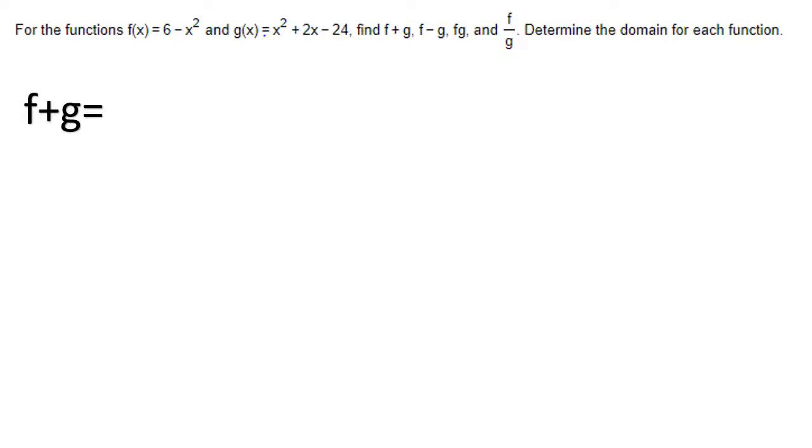Here's an example. We're given two functions, function f and function g. First, let's look at adding. I will take function f, which is 6 minus x squared, and I will add that to function g, which is x squared plus 2x minus 24. All I have to do would be to add the like terms. Notice first, I have a negative x squared and a positive x squared. When I combine those, they cancel and give me zero.